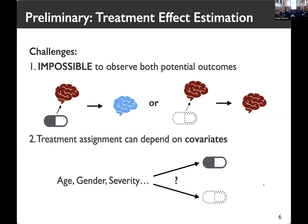There are two main challenges for estimating ATE. One is that it is impossible to observe both outcomes — what happens if you take a drug and what happens if you don't. Once you take a drug, it's impossible to know what would have happened if you didn't. The natural way to deal with this first challenge is to estimate the effects of treated patients and control patients separately and see the difference.